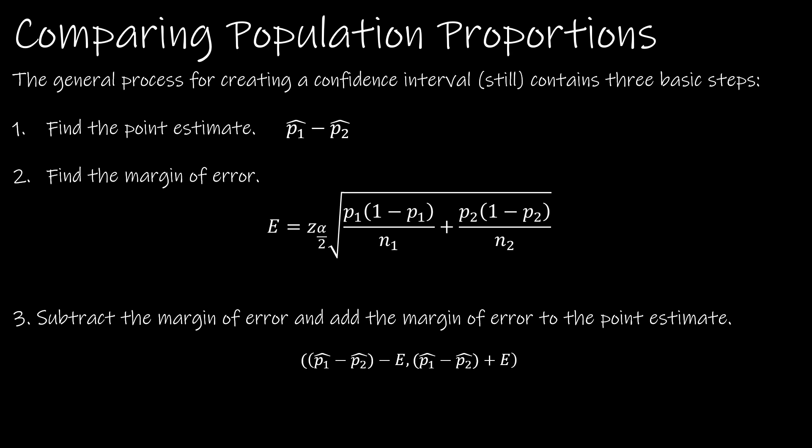We're back to the Z model because we're dealing with proportions. And then to find the confidence interval, we subtract E and add E to the point estimate.